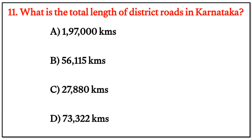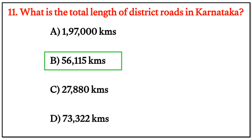MCQ Question 11: What is the total length of district roads in Karnataka? The correct answer is option B — 56,115 km.